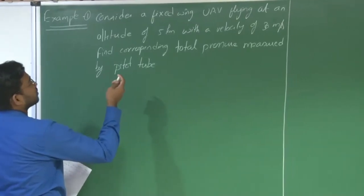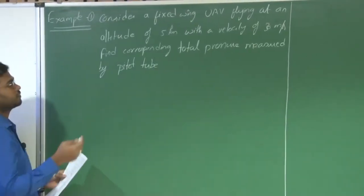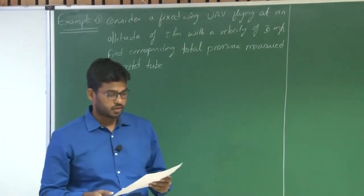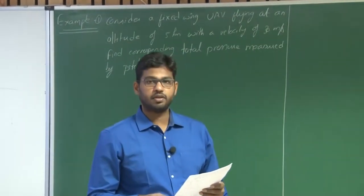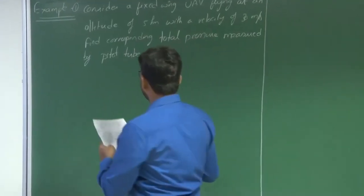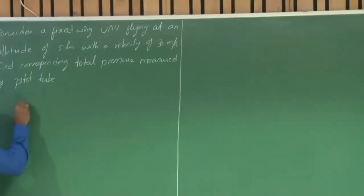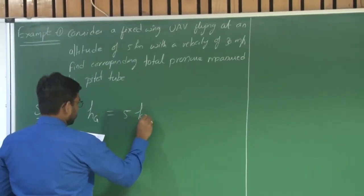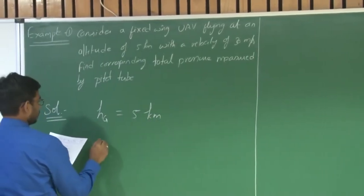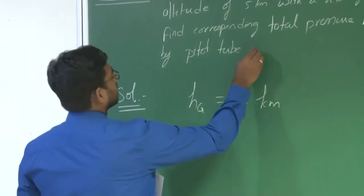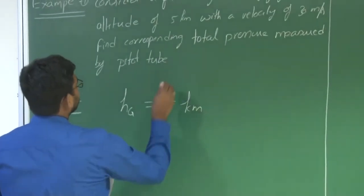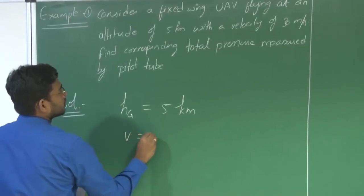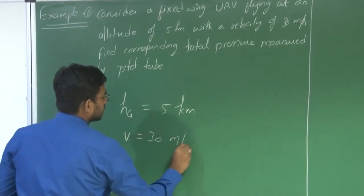The first example is: consider a fixed wing UAV flying at an altitude of 5 kilometers with a velocity of 30 meters per second. Find the corresponding total pressure measured by the pitot tube. The information given is that the geometric altitude is 5 kilometers and the velocity of the flight vehicle is 30 meters per second.